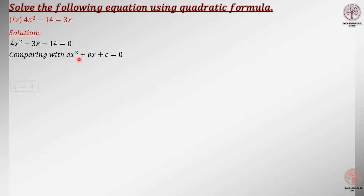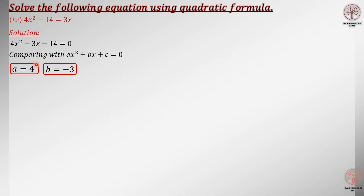After comparing, you will get: a is equal to 4, because the number that is written with x squared is 4. Then your b is minus 3. Then your c is minus 14.